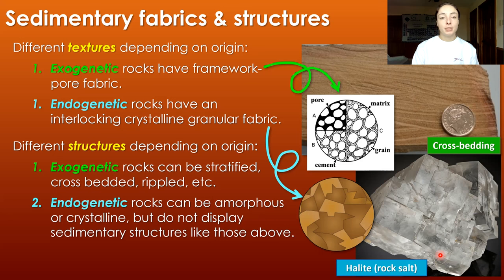Moving on, sedimentary rocks can also be classified based on their provenance or place of origin. The terms we use to classify rocks this way are intrabasinal or extrabasinal. Intrabasinal means those that formed in the basin in which they accumulated. Extrabasinal means those that formed outside of the basin and were transported to the basin by waves, currents, or other transport mechanisms.